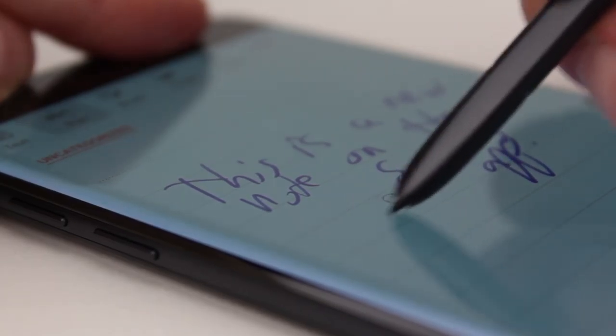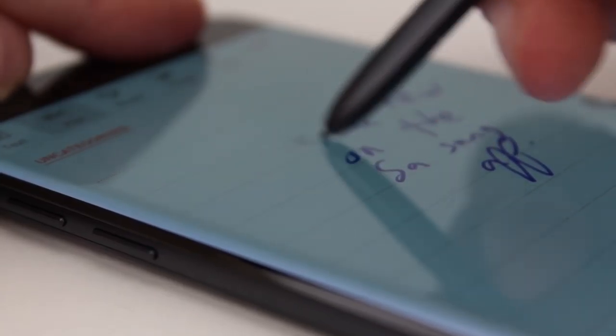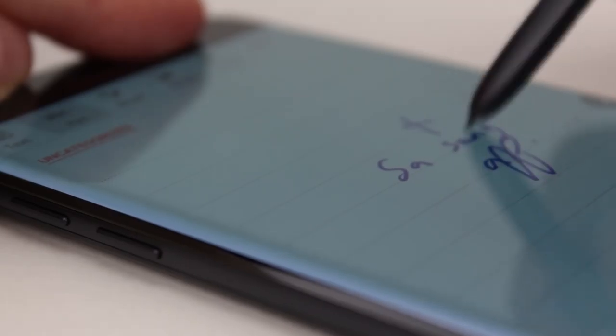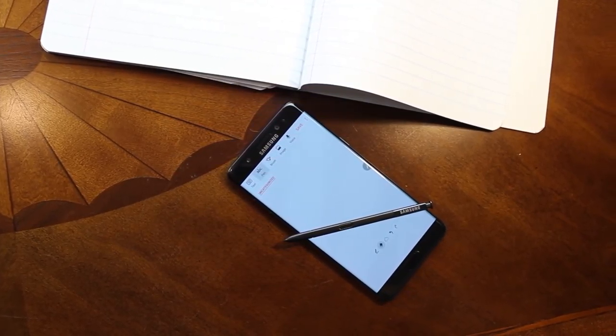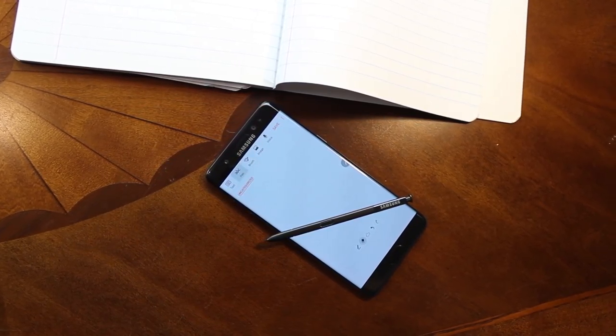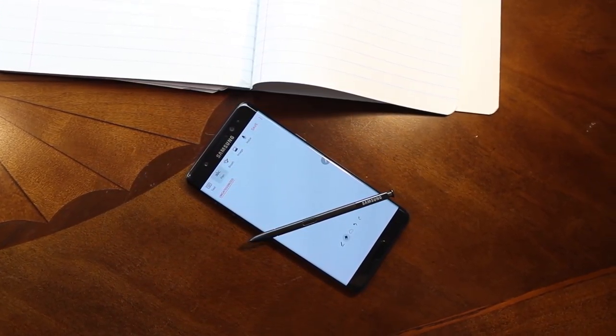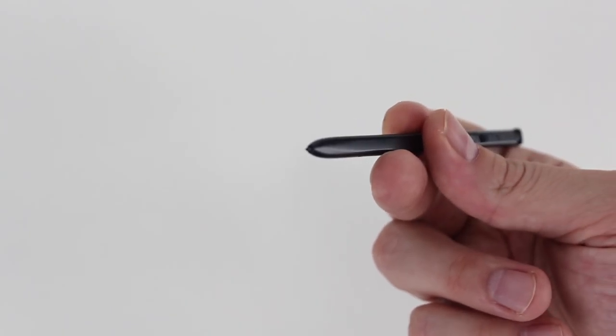This feature was removed somewhere between the Note 2 and 3 and is thankfully here, giving users a super quick and easy way to erase mistakes they've made without having to switch tools in the taskbar on top or whatever. In fact, writing is better than ever with this year's S Pen, a trend that's pretty much been consistent between every Galaxy Note phone since 2011.